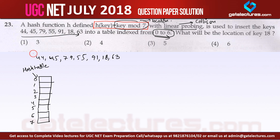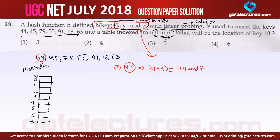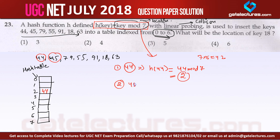We take the first key, 44, and find its location using the formula: hash(44) = 44 mod 7. If you divide 44 by 7, the remainder is 2 because 7 × 6 = 42, so 44 mod 7 = 2. Therefore, 44 will be placed at index location 2.